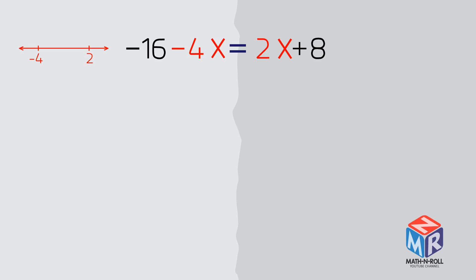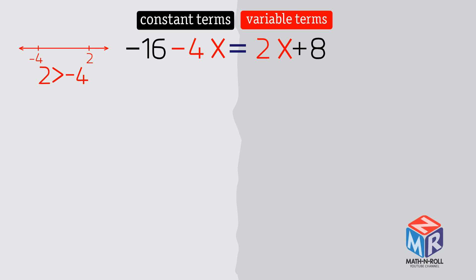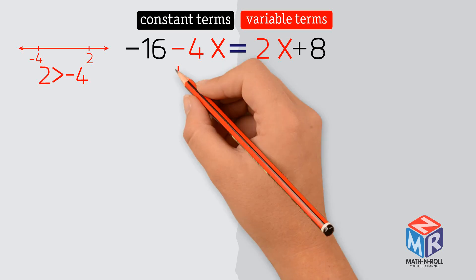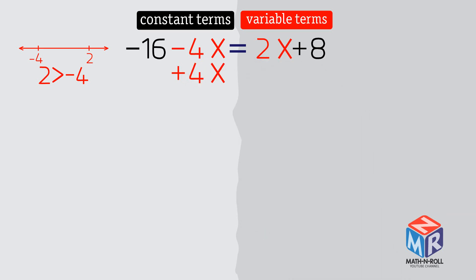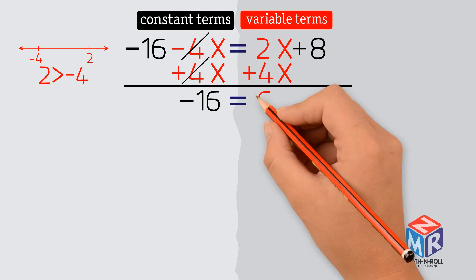We can see on the number line that 2 is greater than negative 4, so 2x has a larger coefficient than negative 4x. So we choose the right side for variable terms and the left side for constant terms. We need to get negative 4x off of the left side. We add 4x on the left side and add 4x on the right side to keep the balance. Negative 16 equals 6x plus 8.